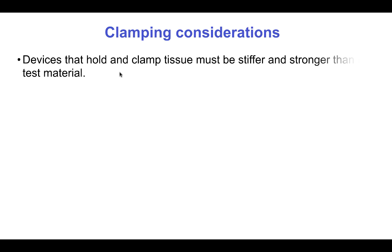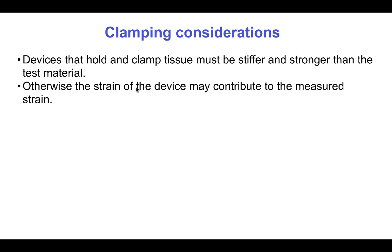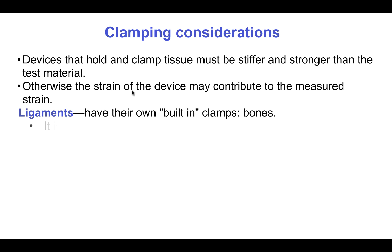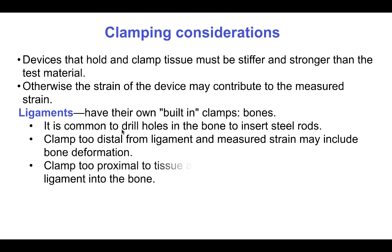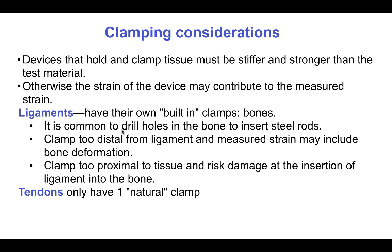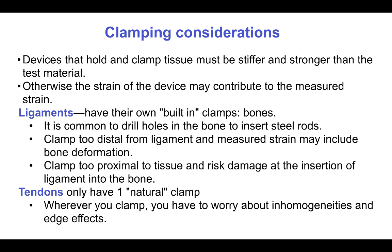Clamping the tissue to the test device is a considerable challenge. The clamp must be stiffer and stronger than the test material so that its strain doesn't contribute to the measured strain. Ligaments have built-in clamps in the form of bones, and it's common to drill holes in the bone to insert a clamp or steel rod. If the clamp is too far from the ligament, the measured strain may include bone deformation effects; if too close, there's risk of damage at the insertion. Tendons only have one natural clamp, making them more difficult to test, and end effects and inhomogeneities must also be considered.